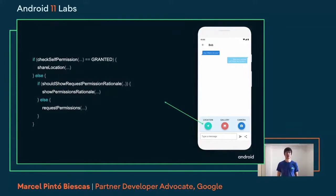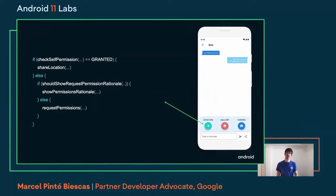Alice taps the location button, which triggers what we call the request best practice. This is pseudo code that applies to any runtime permission. First, we check if we have this permission. If not — most likely the first case — we then call shouldShowRequestPermissionRationale. This is a system call that returns true if the system decides there is not enough context or the user might not be sure why you're asking for that permission, telling you that you should explain why you're using it before requesting. Most of the time it will return false the first time, meaning the system says go ahead and ask the user. So then you can request the location permission.